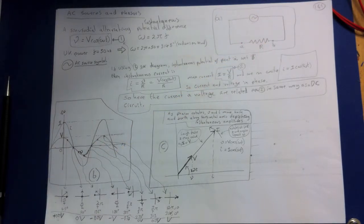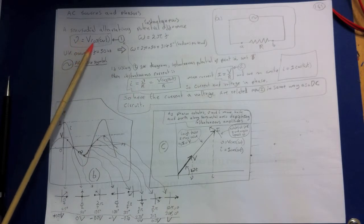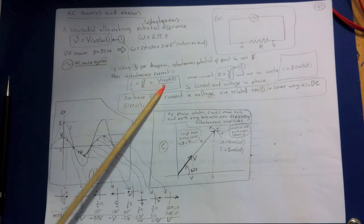Suppose the instantaneous potential of point A with respect to point B is given by this equation here V equals capital V cosine omega t. The instantaneous current I in the resistor is simply V instantaneous V over capital R so that's obviously just going to be this value here.